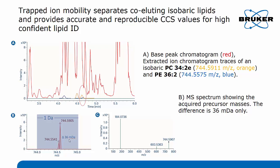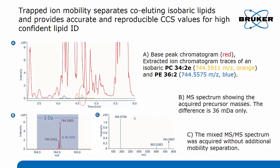On one hand the PC 34:2E with a mass of 744.591, and the isobaric lipid PE 36:2 also with a nominal mass of 744.55. In the MS spectrum you can see that both precursor ions are present and they differ by only 36 milli-Dalton. On a typical QTOF instrument an isolation window of one Dalton is applied, but even going down to 0.5 or 0.1 Dalton is not enough to separate these two coeluting isobaric lipids with the quadrupole.